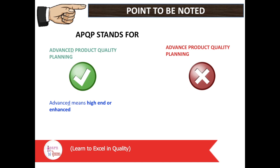Now the question is, what is the difference between both of them — 'Advanced' and 'Advanced'? One meaning of 'Advanced' means high-end or enhanced, while another meaning of 'Advanced' means before or prior. APQP uses the high-end planning sense, so this is why the APQP full form is Advanced Product Quality Planning and not the other interpretation.